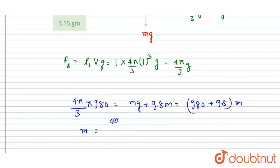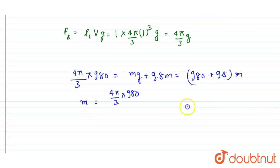So I will write the mass is equal to 4π/3 into 980 in division. So if you will add the two, you will get 989.8.